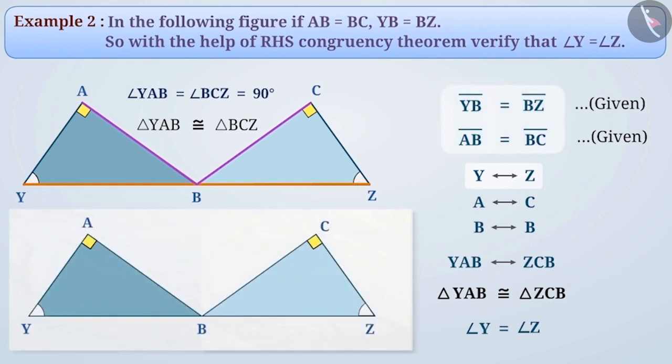If we trace this shape on the trace paper and fold it on its width in such a way that the fold passes through point B, that is, place triangle YAB on triangle BCZ, then we can see that angle Y fully covers angle Z, verifying that the measurements of both triangles are equal.